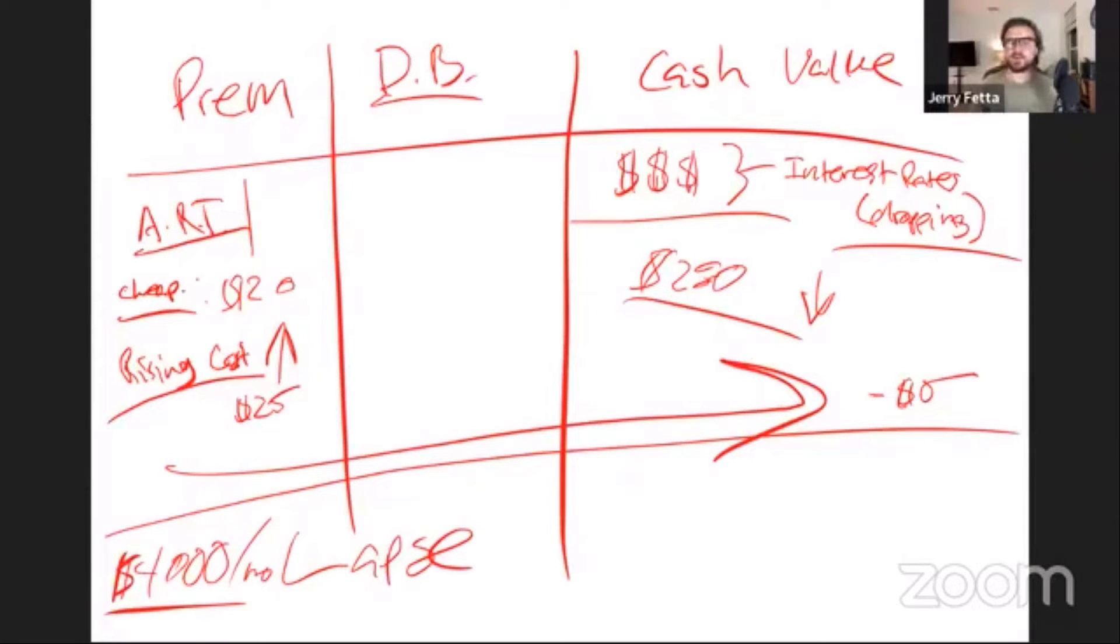Guys, insurance is designed by actuaries. These people eat, sleep, breathe, live lifespans and statistics and risk. They understand all this stuff. They designed a policy that solved their problem. Their problem was elderly citizens were taking policy loans, reducing the performance of the insurance company's portfolio, therefore reducing their profit.